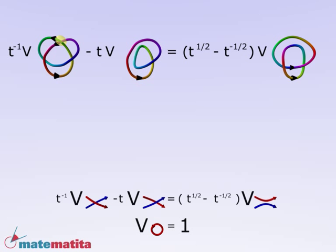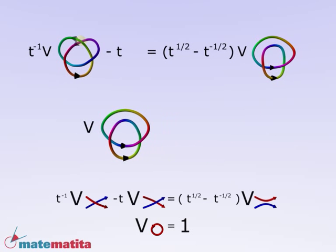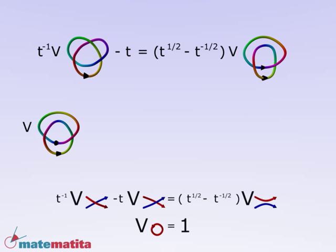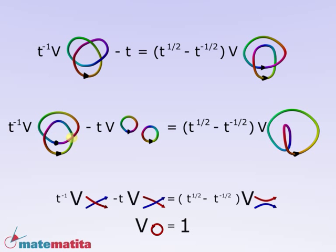Choose a crossing and apply the first relation to it. Simplify and apply the first relation again to the knot on the right to write a new equation. Choose a new crossing and go on like this, writing equations and simplifying. Using always the same relations, we can calculate the Jones polynomial of the simplest knots.